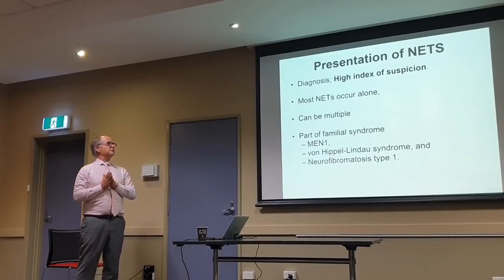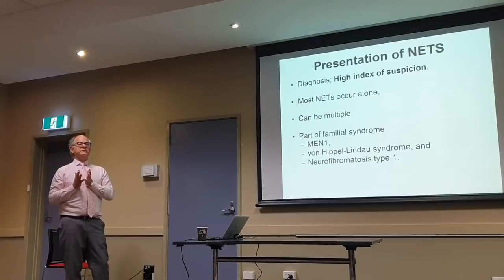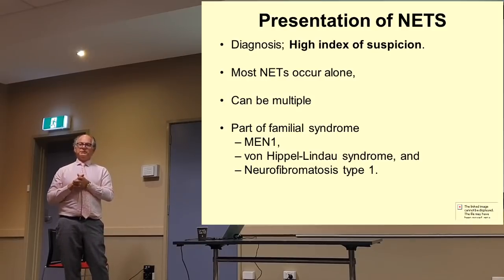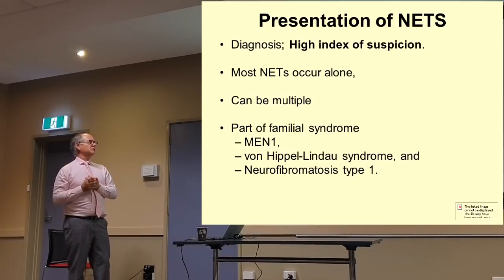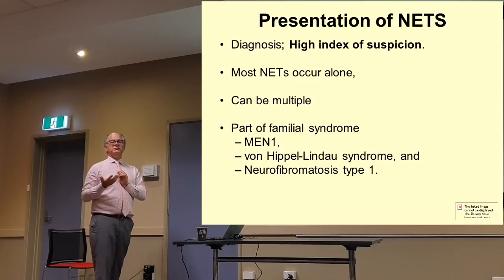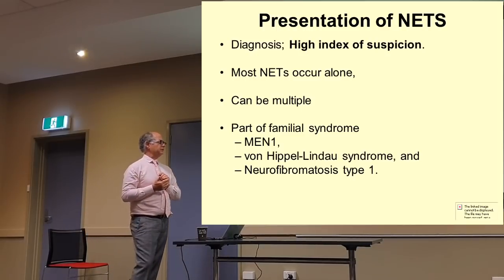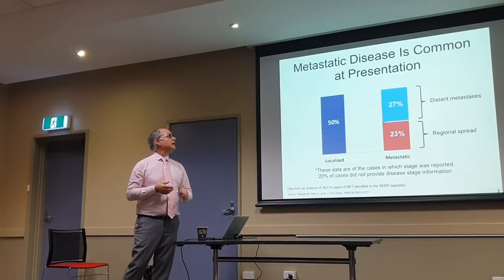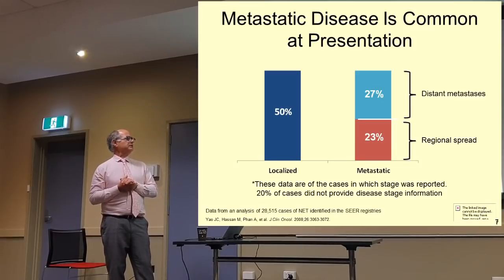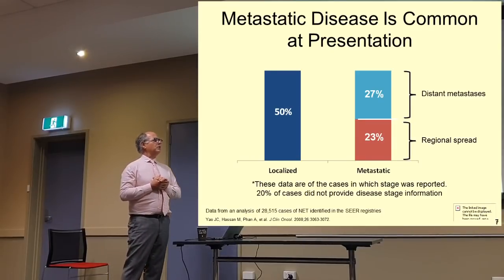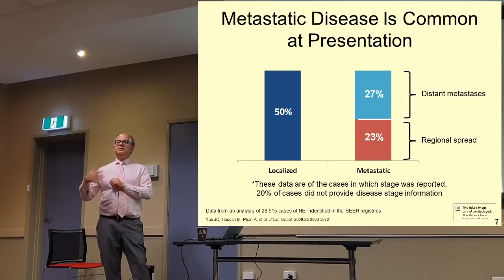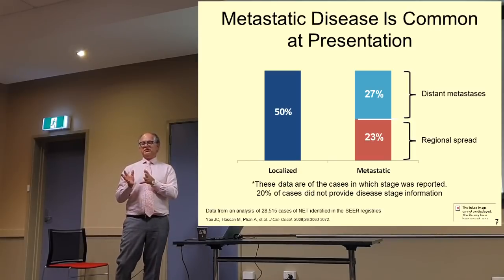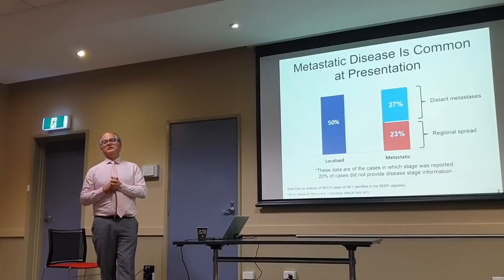NETs can present in unusual ways. Most of them present either as isolated tumours or they can be multiple — we often see patients with multiple NETs from the same organ. Or they can be part of a familial syndrome. There are various familial syndromes which present with NETs, for example MEN — multiple endocrine neoplasia. About a quarter of them have regional spread just to lymph nodes, and about 50% are localised.